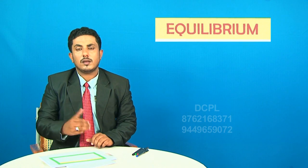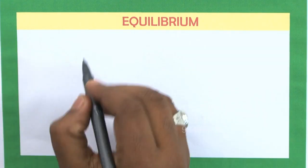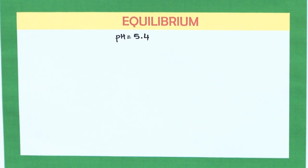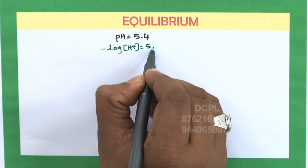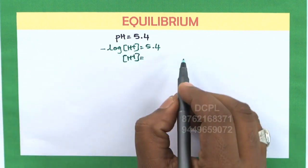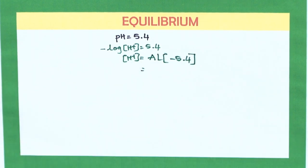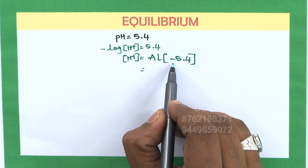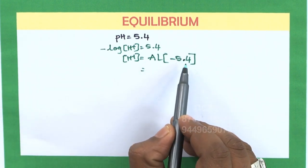Sometimes the pH of a solution is given and they ask you to calculate the H+ ion concentration. The H+ ion concentration can be calculated by taking the anti-logarithm of the pH value. For example, if pH = 5.4, then pH = −log[H+] = 5.4, so log[H+] = −5.4, and H+ = anti-log(−5.4). However, you cannot calculate the anti-logarithm of negative values, so you need to convert it. In −5.4, both the mantissa and characteristic parts are negative, but we require the mantissa to be positive.